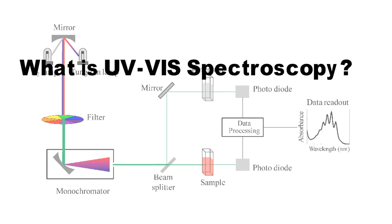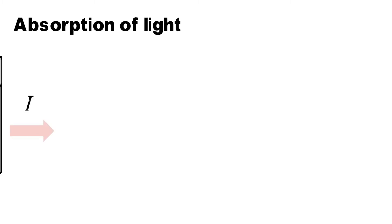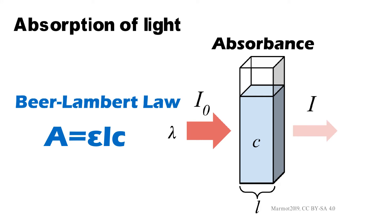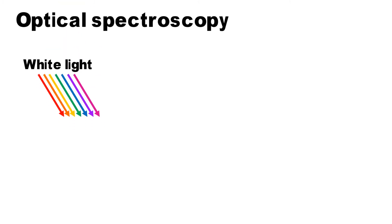What is UV visible spectroscopy? UV visible spectroscopy is a technique based on the absorption of light by a sample. Let's look at how this device works.